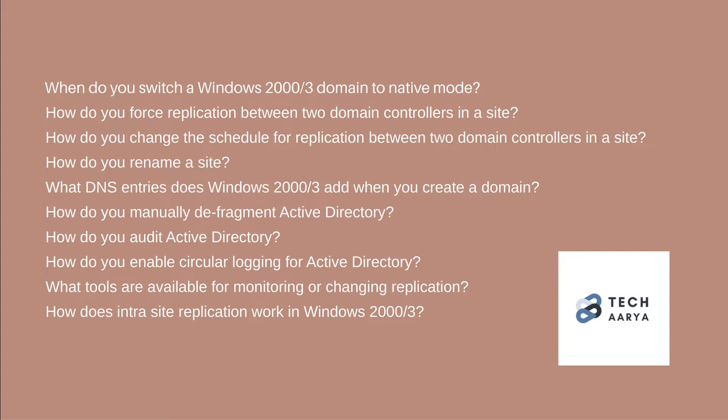11. When do you switch a Windows 2003 domain to native mode? 12. How do you force replication between two domain controllers in a site? 13. How do you change the schedule for replication between two domain controllers in a site? 14. How do you rename a site? 15. What DNS entries does Windows 2003 add when you create a domain? 16. How do you manually defragment Active Directory?